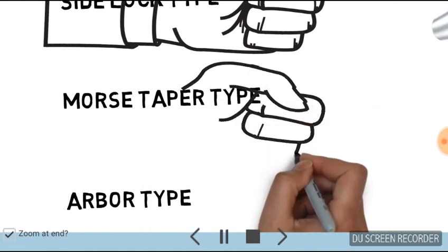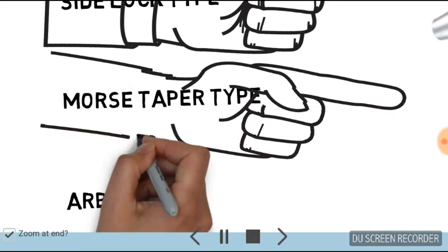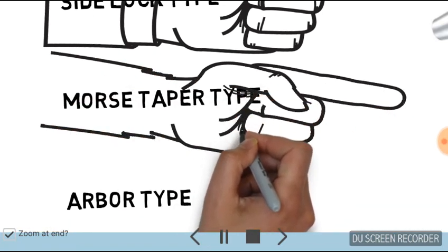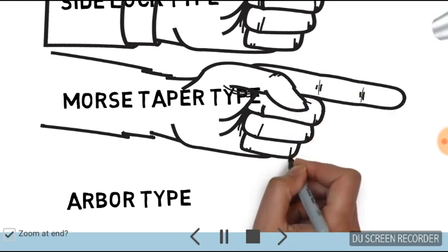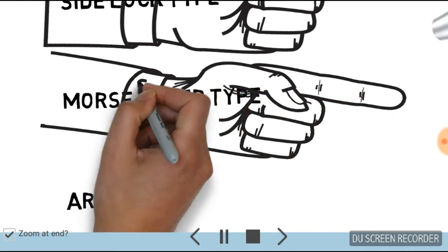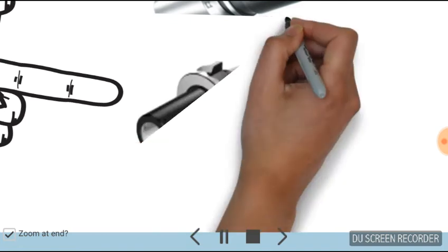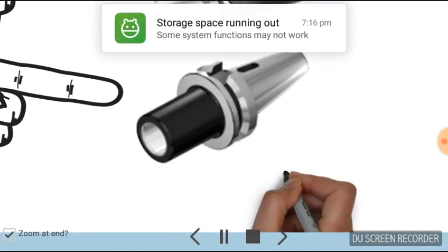The Morse taper is a very special type of tool holder in which we use a sleeve for holding the tool inside the tool holder, and this makes operations easy in CNC machines.